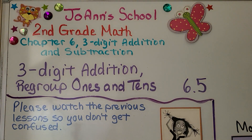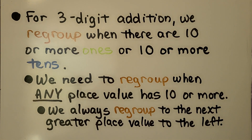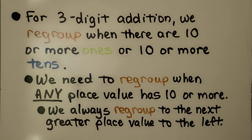Lesson 6.5: Three-Digit Addition — Regroup Ones and Tens. For three-digit addition, we regroup when there are ten or more ones or ten or more tens. We need to regroup when any place value has ten or more. We always regroup to the next greater place value to the left.